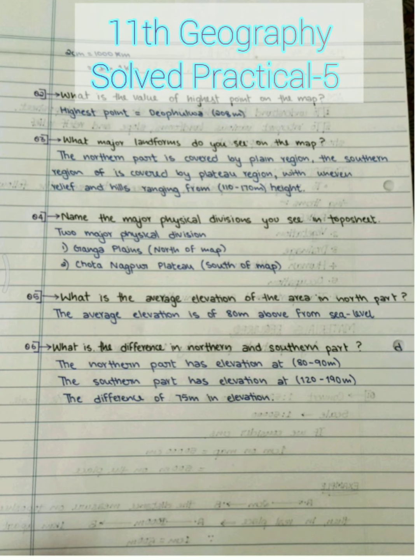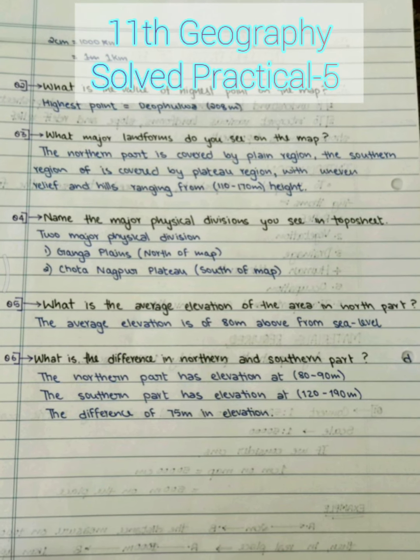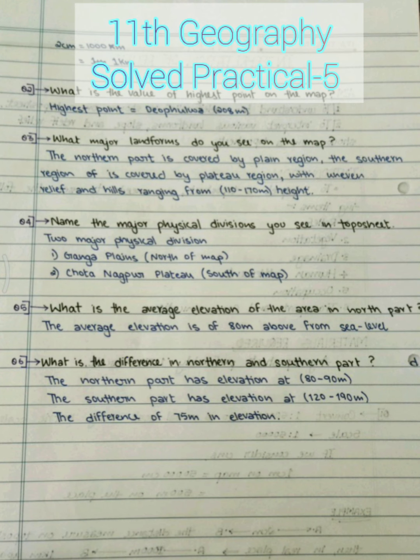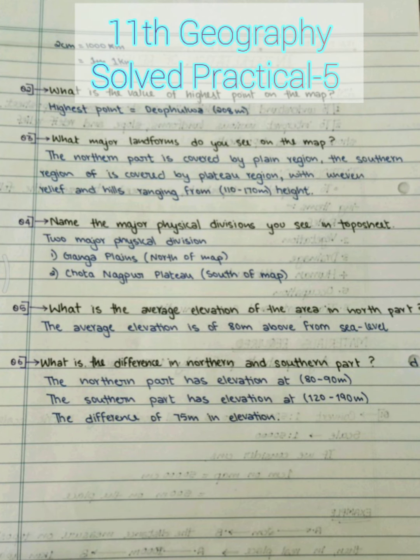Question 3: What major landforms do you see on this map? You can see landforms like a plain region — the north is a plain region with a flat surface. The south is covered with a plateau region with uneven relief. There are some hills, and the hill heights range from 110 to 170 meters.